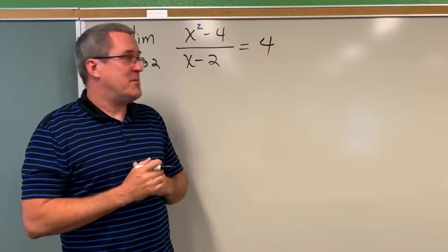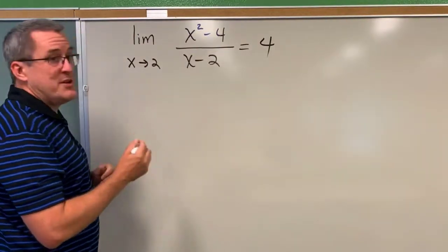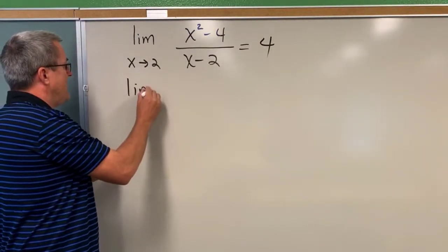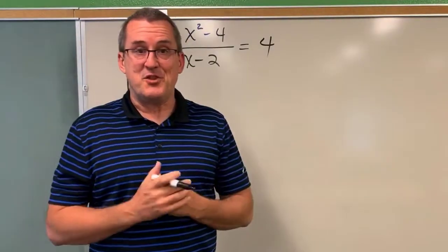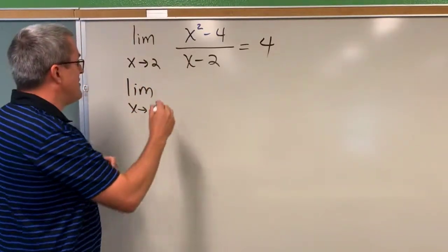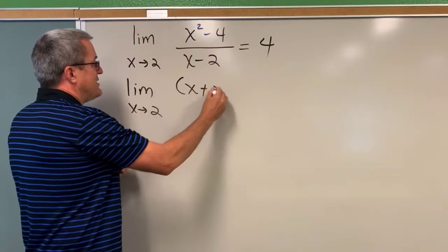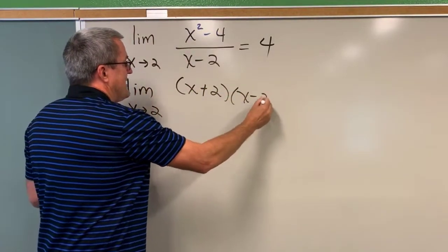But let's look at this another way, a more algebraic way to confirm our approach. We would do something like this. We know that this numerator is the difference of two perfect squares. And so we could factor that numerator as x plus 2 times x minus 2.